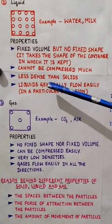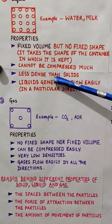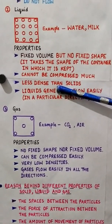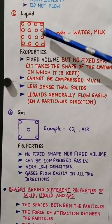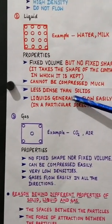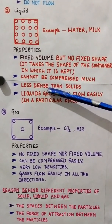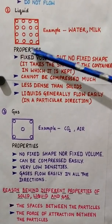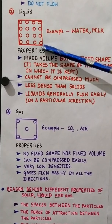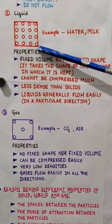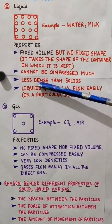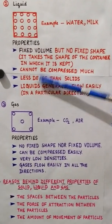The third property is density. Liquids have comparatively high density because the particles are quite close to each other. The density depends upon the mass in a particular volume. Liquids have more particles than gas and fewer than solids, so liquids are less dense than solids but have more density than gases.